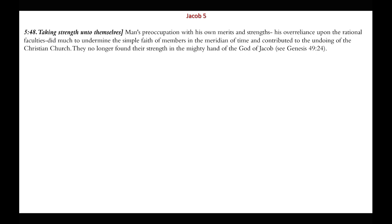Chapter 5, verse 48: 'taking strength into themselves' — man's preoccupation with his own merits and over-reliance upon the rational faculties did much to undermine the simple faith of members in the meridian of time and contributed to the undoing of the Christian church. They no longer found their strength in the mighty hand of the God of Jacob — that's what too many so-called intellectuals in this church do: they rely upon their own reasoning and rationale and think they know better than God.